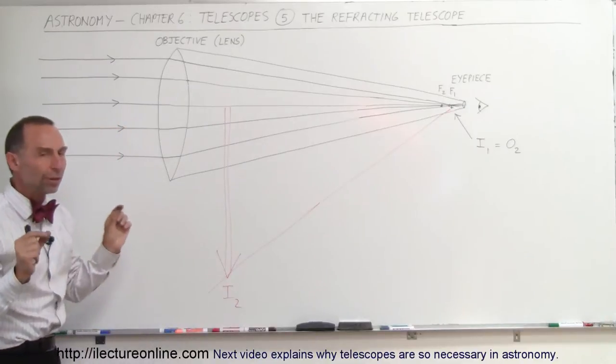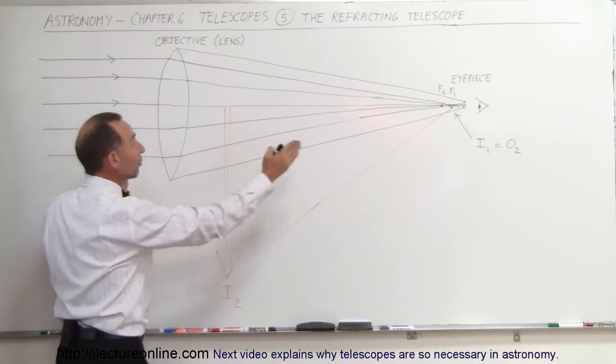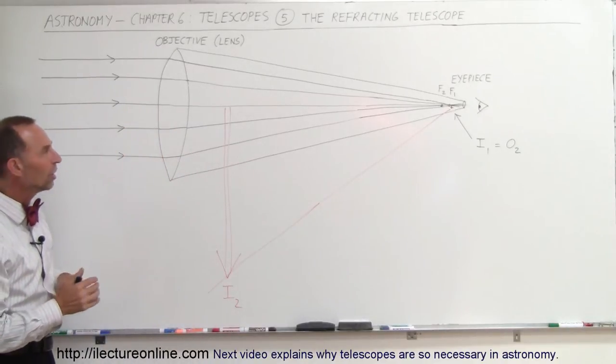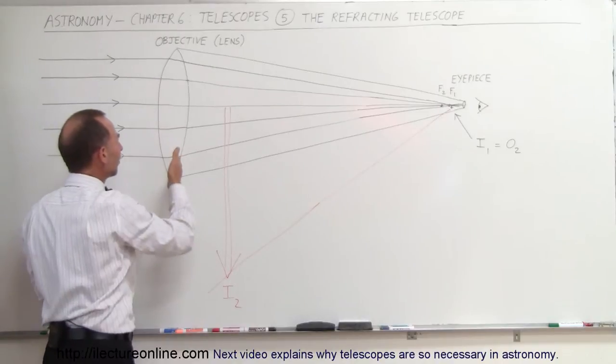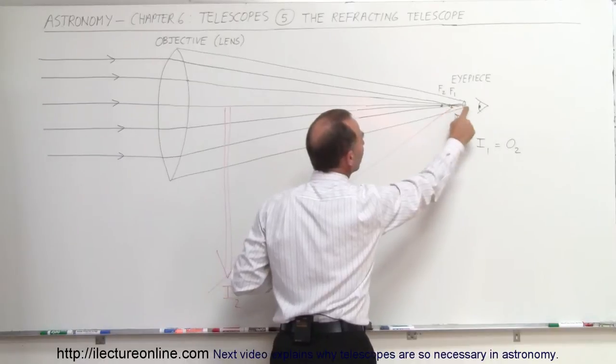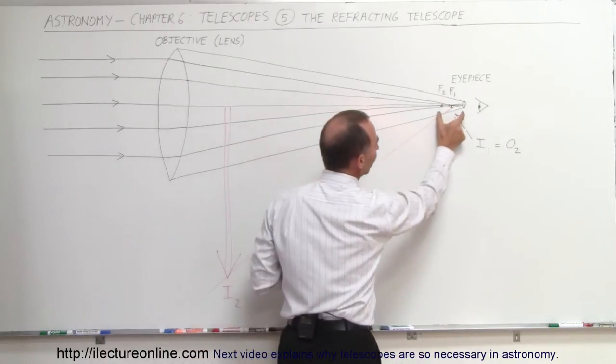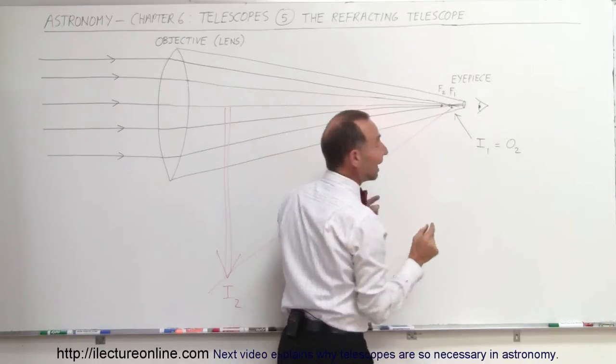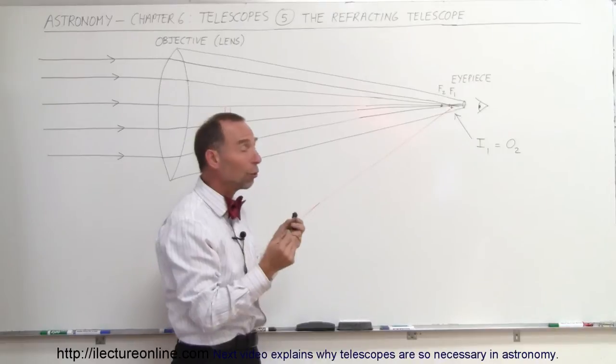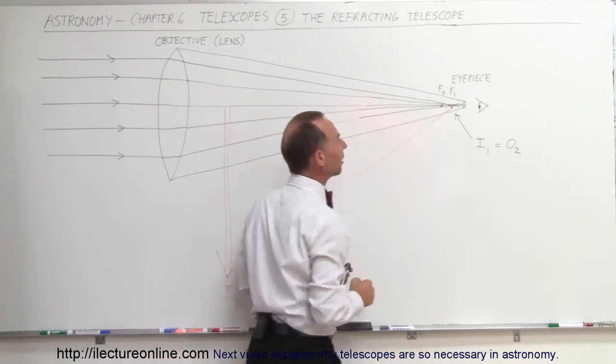So we take those two lenses and place them exactly the right distance apart, depending upon the focal length of these two lenses, and then you have yourself a telescope. So the condition is that the first lens, the objective lens, has a very long focal length. And so you can see that the focal point almost reaches the second lens, but not quite. The focal length of the second lens is much smaller, and in order to make a telescope you have to make sure that those two focal lengths overlap. If they don't overlap, it doesn't act as a telescope, so you want these two to overlap, and then you have a telescope.